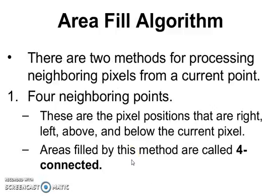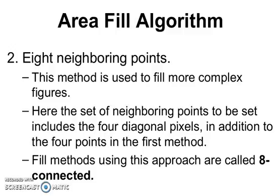There are two methods for processing neighboring pixels from a current point. The first is four neighboring points — pixels located at the right, left, above, and below the current pixel. Areas filled by this method are called four-connected. The second is eight neighboring points, used to fill more complex figures. Here the set of neighboring points includes four diagonal pixels in addition to the four points from the first method. Fill methods using this approach are called eight-connected.